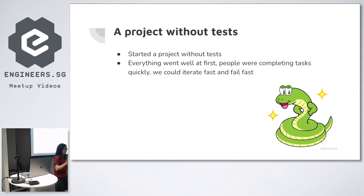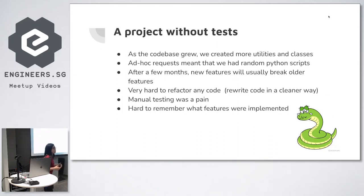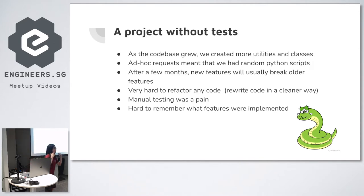If your project lasts one week, fine — you can skip tests. But if you start fast with no tests, you can iterate quickly and close a lot of Jira tickets. Eventually you have more and more utilities and scripts, and the project owner comes with ad hoc requests. You start wondering: what feature did I have before? Did my own feature break? That's when my team and I realized we really need test coverage.